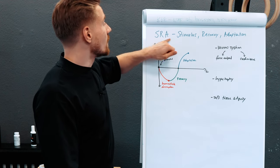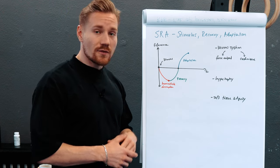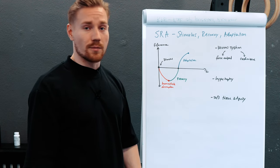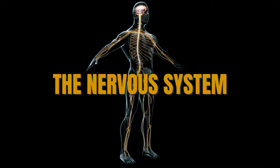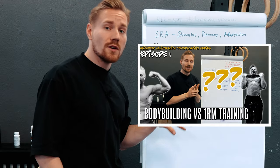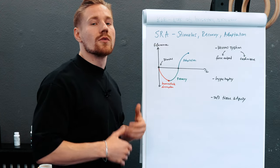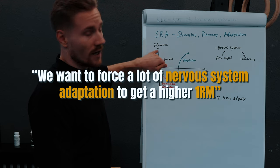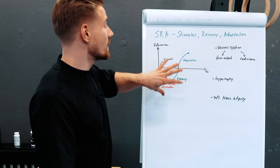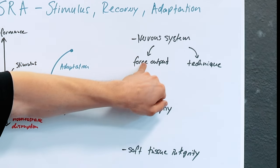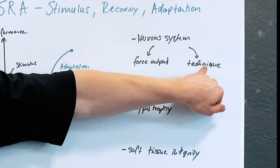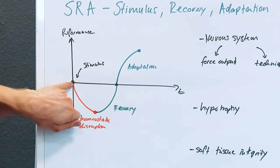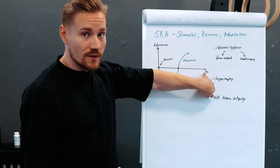But SRA curves look different for different systems and tissues in our body, and they differ for different stimuli we provide. Let's take a look at the nervous system. As we covered in the first video, motor skill is very important for one rep max strength training. We want to force a lot of nervous system adaptation to get higher one rep max performance. We can get two outcomes: more force output, or better technique. Both require different stimuli and different recovery times.